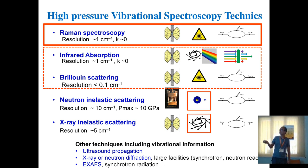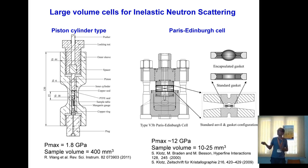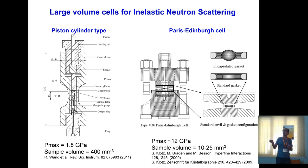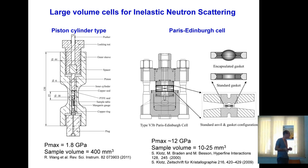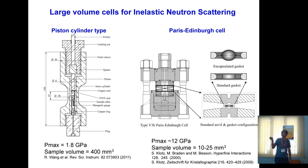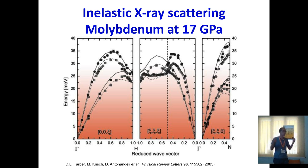Regarding neutron and X-ray techniques under high pressure, for inelastic neutron scattering you need large sample volumes — for instance, the Paris-Edinburgh press allows up to 12 GPa or more. However, to preserve a sufficient number of scattered neutrons, it is better not to go too far in pressure, keeping a large volume to get a better signal.